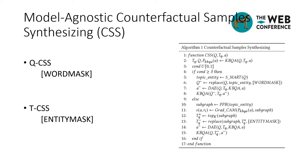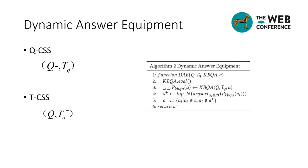As can be seen from Algorithm 1, synthesizing counterfactual samples requires three main steps. The first step is training the KBQA model with the original sample. The second step is synthesizing a counterfactual sample using QCSS or TCSS. The third step is training the KBQA model with the counterfactual sample. In order to assign ground-truth answers to those counterfactual KBQA pairs during the training process, we designed a dynamic answer allocation mechanism that selects the entity with the highest probability and subtracts it from the original answer distribution as the answer to the counterfactual example.